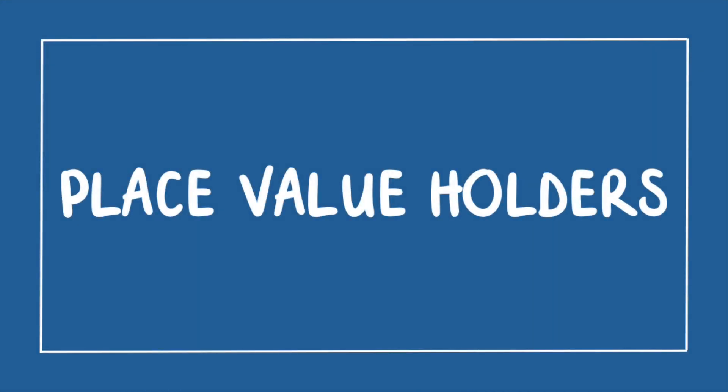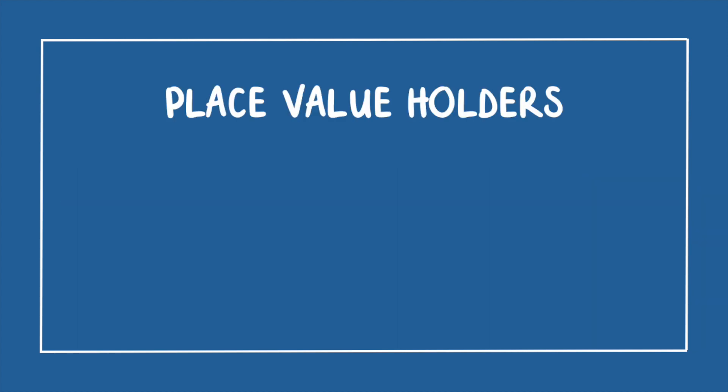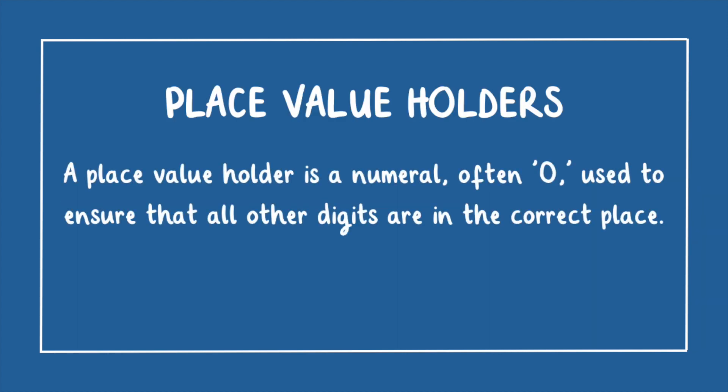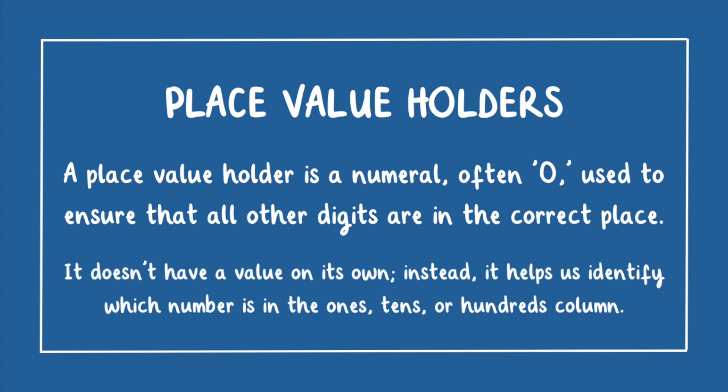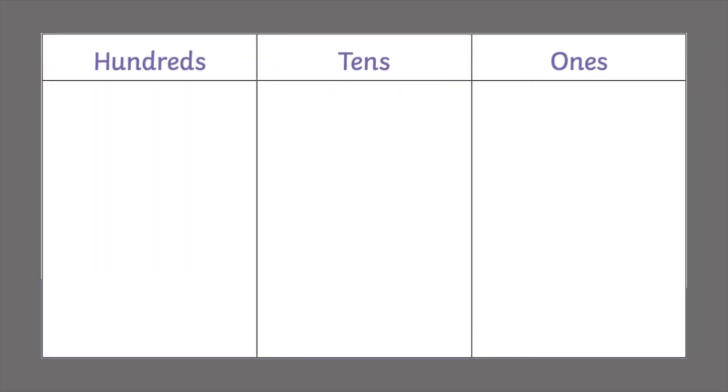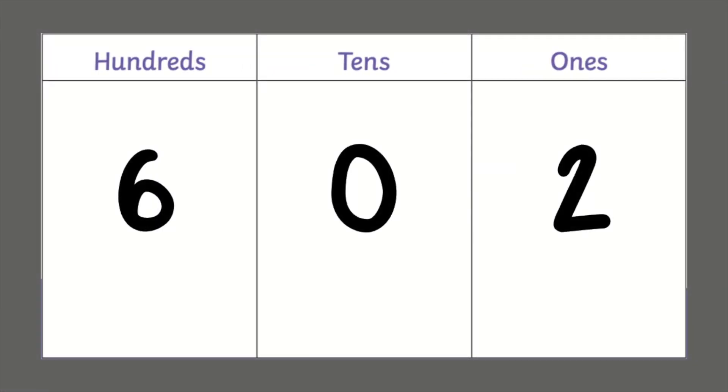Place value holders. A place value holder is a numeral, often zero, used to ensure that all other digits are in the correct place. It doesn't have a value on its own; instead it helps us identify which number is in the ones, tens, or hundreds column.